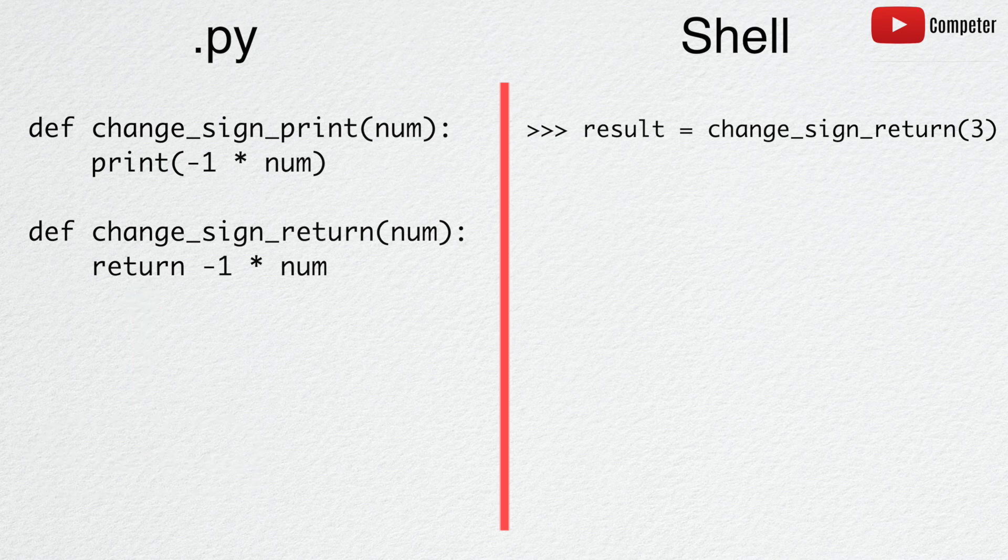When we print the variable, negative 3 is printed, because the function returned minus 3, which was then assigned to the variable.